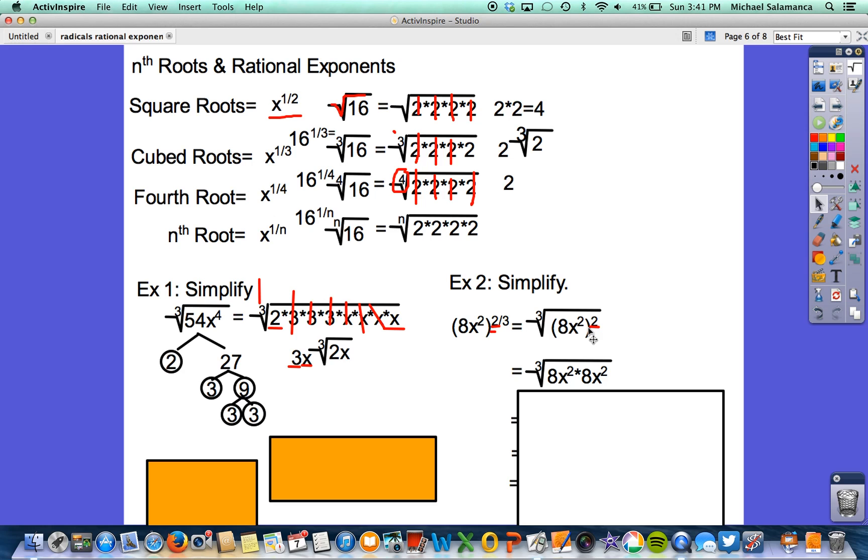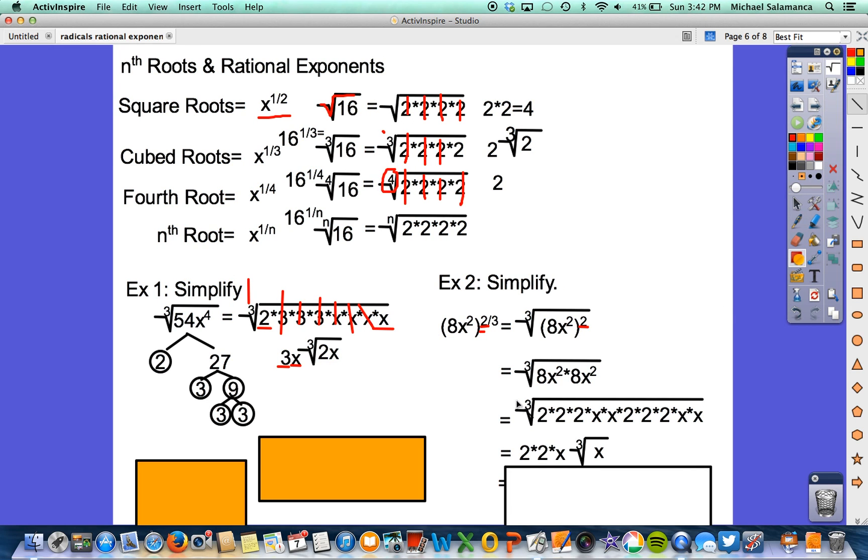Next thing we did is we broke that up. Since it's a quantity squared, we know we have 8x squared times 8x squared. We broke that down into all of these values. And then we start pulling things out. So here's how we got there. Because it's a cubed root, we need 3. So 1, 2, 3, 2's. We write one of them down here.